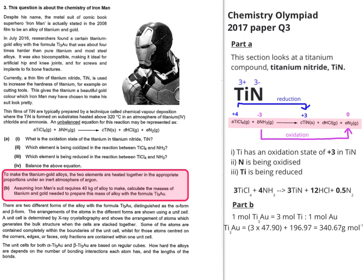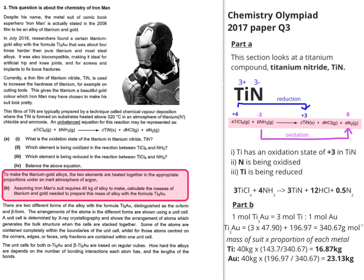If we think about the amount of alloy we need to make, which is 40 kilos, and the proportion of each metal present, which in terms of the moles is the atomic mass of the metal divided by the molar mass of the alloy, you can see quite easily what we need to multiply. 40 kilograms times 143.7 over 340.67—143.7 being 3 lots of 47.90—makes 16.87 kilograms for titanium and 23.13 kilograms for gold.